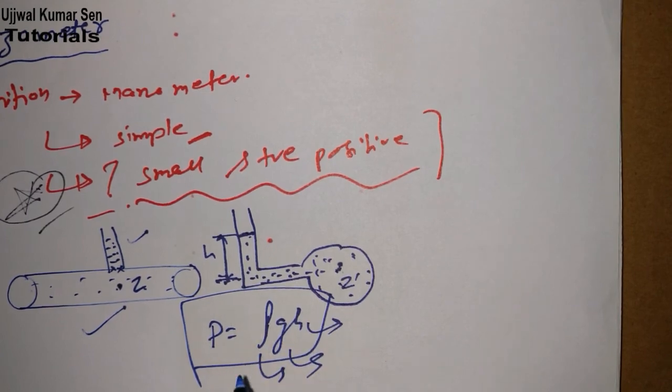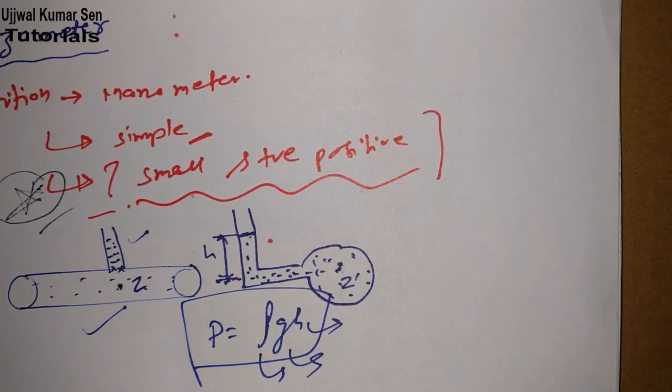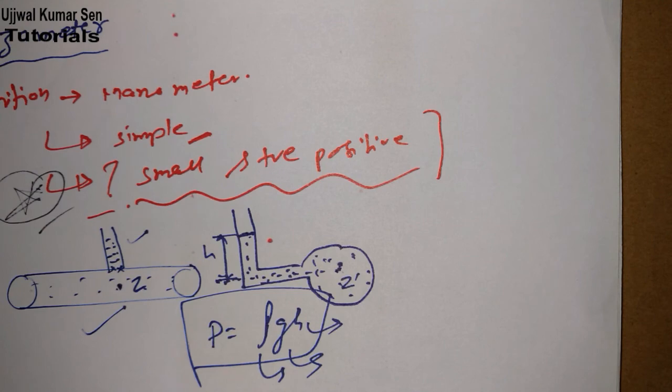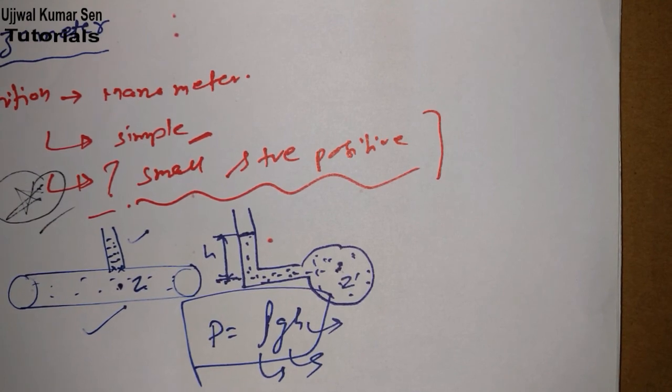I hope you understand. And the most important thing I have shared with you: the formula p = ρgh. This is useful for numerical problems. But most of the time in competitive examinations they ask questions from U-tube manometer which I am going to share with you in the next tutorial.